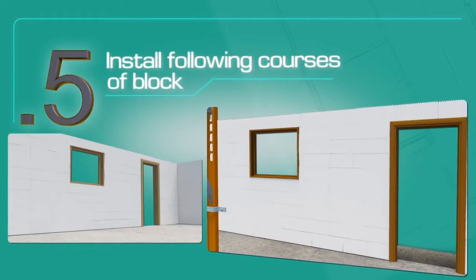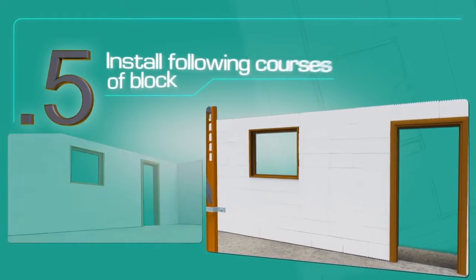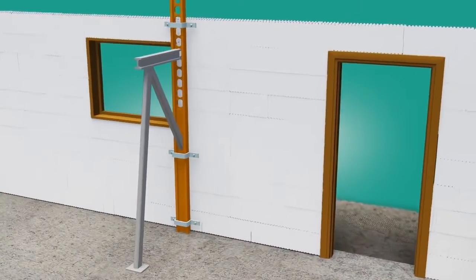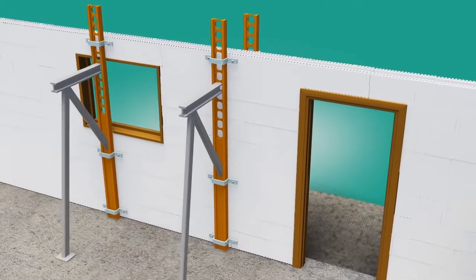Install following courses of block by continuing to overlap the courses so that all the joints are locked both above and below by overlapping blocks.